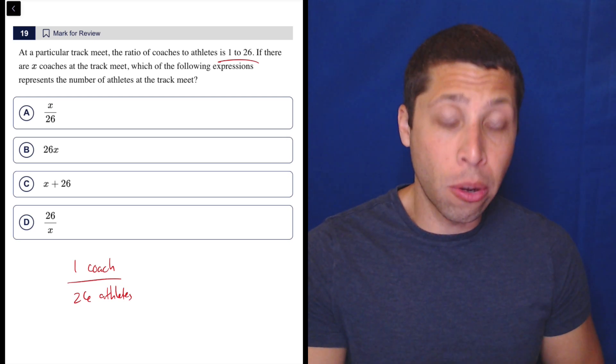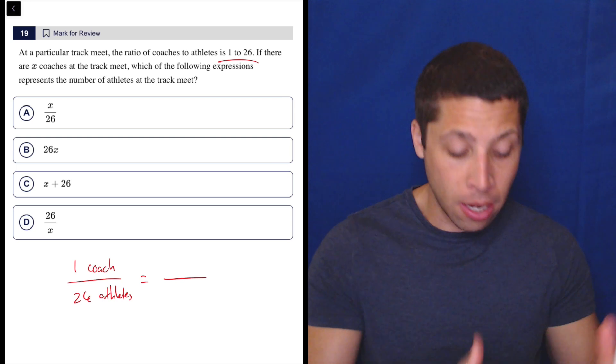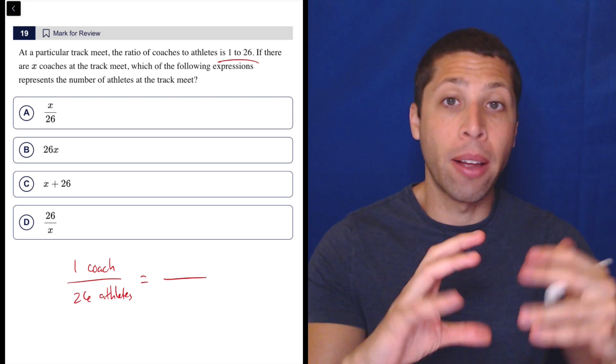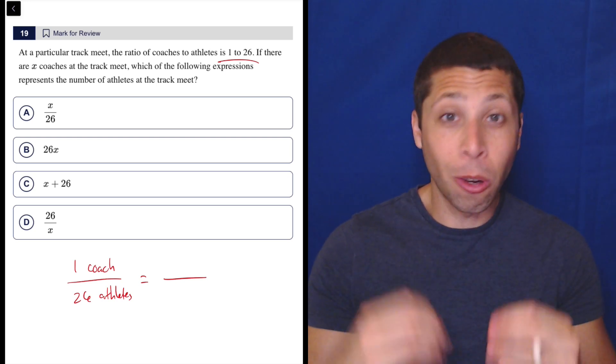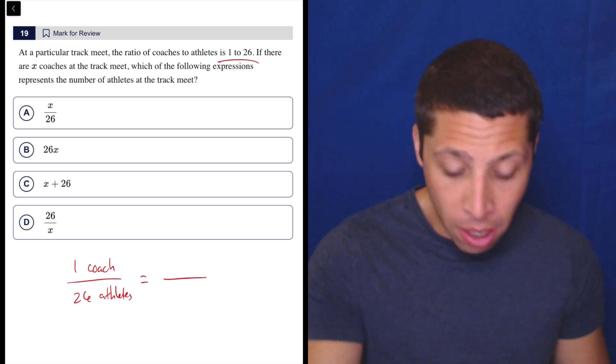Now, when we use ratios, normally we would set two ratios equal to each other. So the whole point is that no matter how many coaches or athletes you have, that relationship is preserved. So we're using the properties of fractions and the fact that we can reduce fractions to our advantage. So what do we know? Well, let's be very literal here.